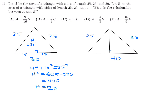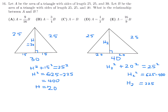For triangle B, the perpendicular bisects the base of 40 into two halves of 20. Then h₂² + 20² = 25², so h₂² = 625 − 400 = 225, giving h₂ = 15.